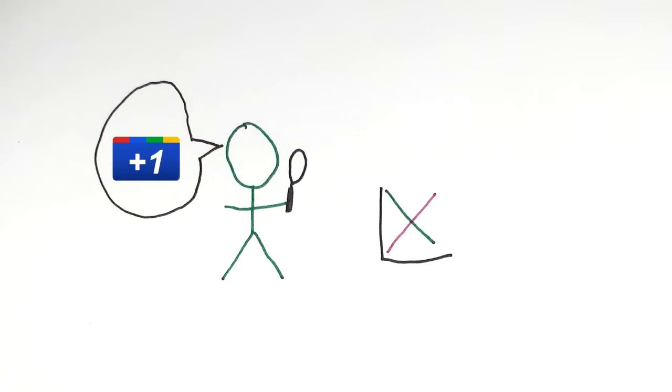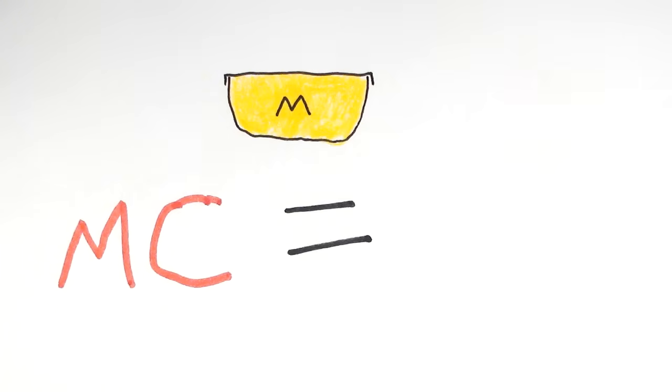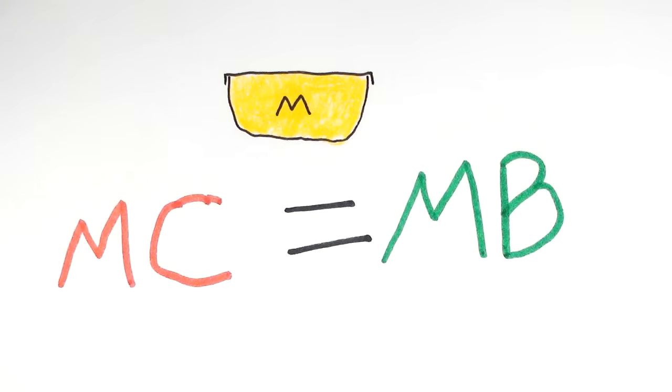Basically, economics tells us that we should keep buying margarine until its marginal cost equals its marginal benefit. Sounds tasty.